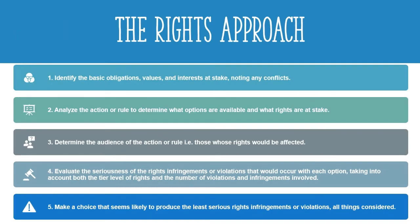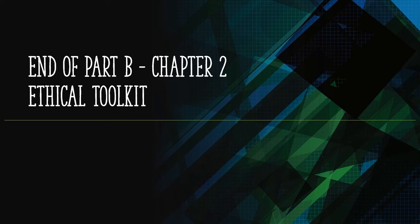Finally, we have the rights approach, which tries to identify which rights are at stake in any possible action. After ranking the tiers of rights and identifying the affected individuals, the decision maker should select the option that minimizes the cumulative violation of rights. Here we see the contrast with utilitarian approaches — utilitarian approaches try to maximize cumulative benefit, while the rights approach tries to minimize violations to human rights. With the rights approach, we reached the end of the ethical toolkit video and chapter 2. Tune in to chapter 3 for more interesting topics and cases.